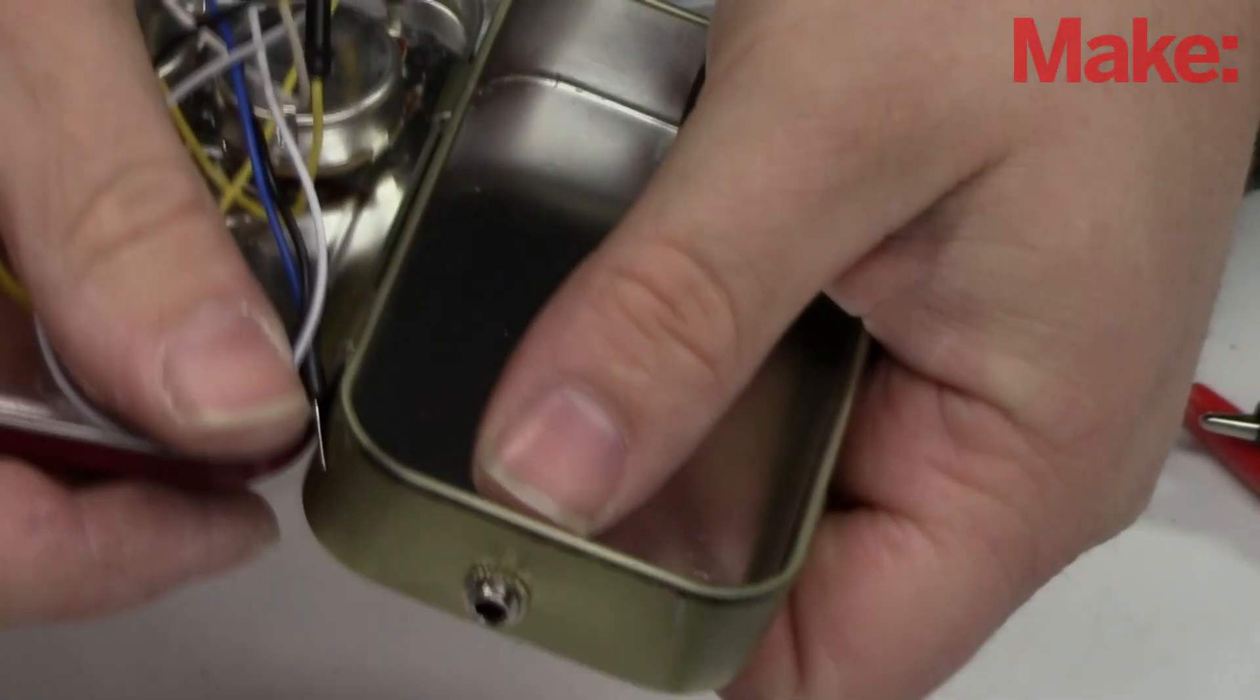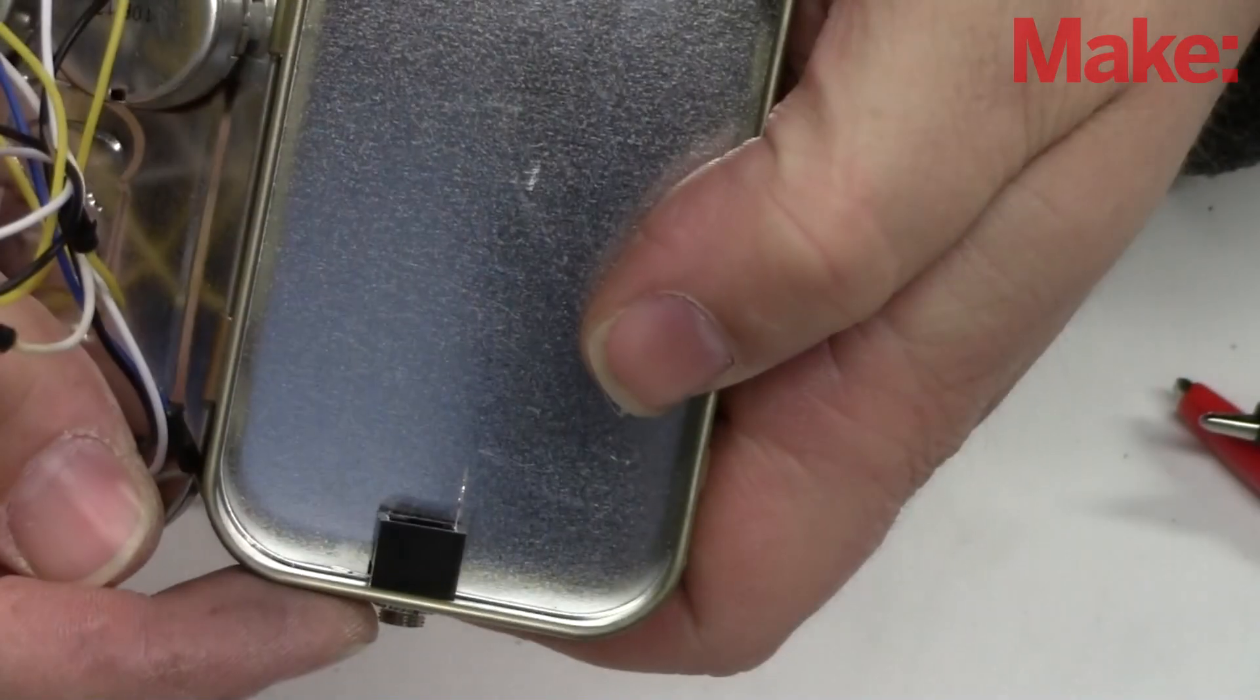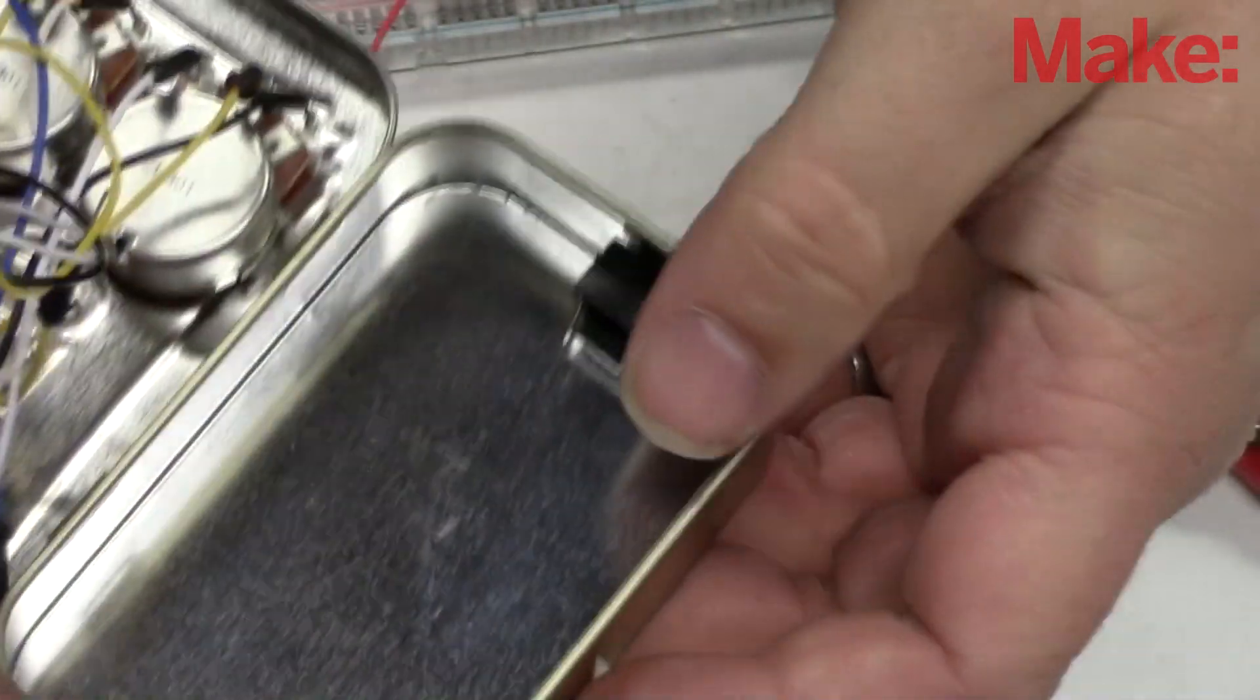Next, I connect two small audio jacks. The top one here will be for the probe to actually take the frequency data, and the bottom one will be for a headphone or the 8 ohm speaker.